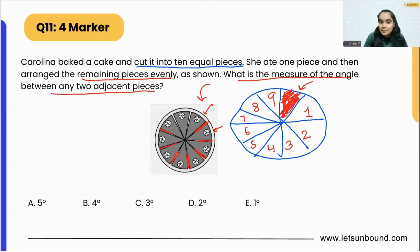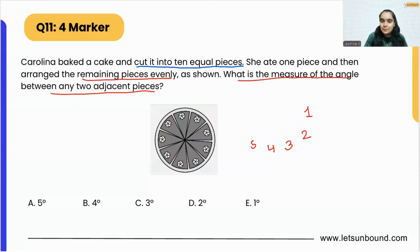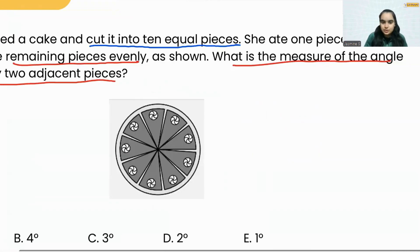This gap is actually nothing but the space of the one piece which she has eaten. Though it is very minimal, if we add up all these tiny tiny spaces, it will add up to the actual space of the one piece Carolina has eaten. Now the main question is: what is the measure of the angle between any two adjacent pieces?